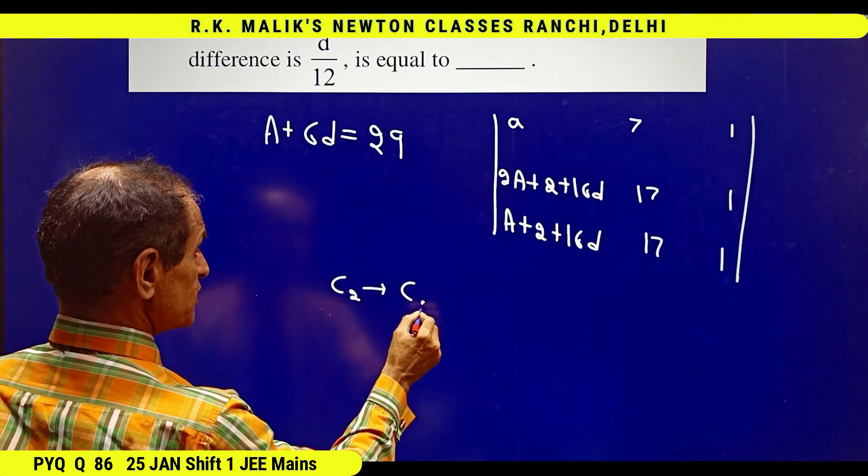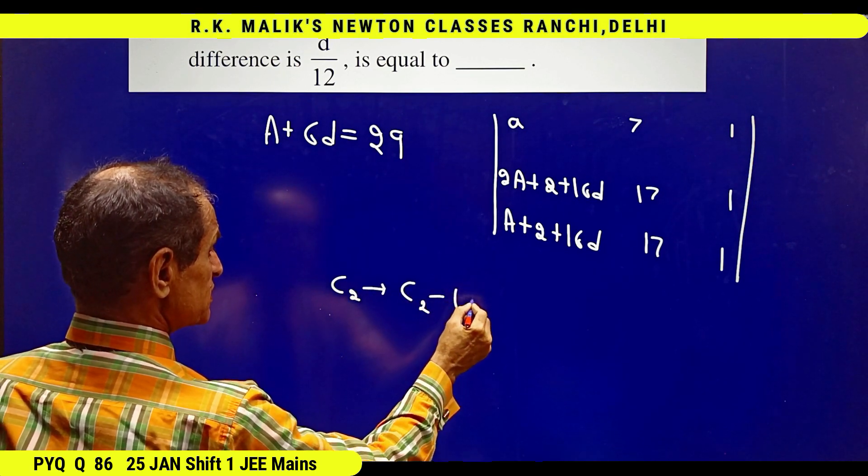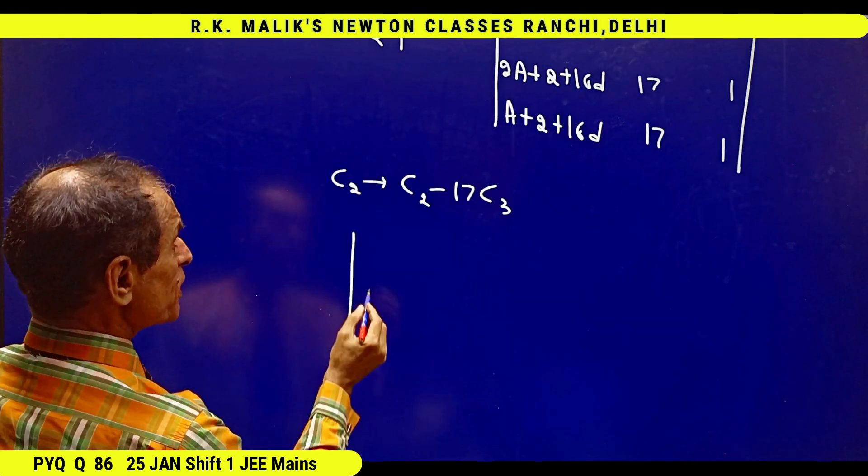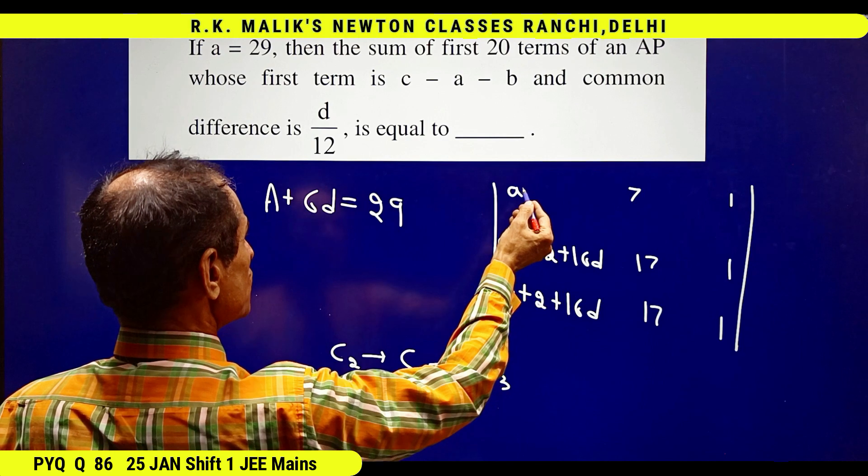C₂ changes to C₂ minus 17C₃. For a, I can write 29 also; it is not going to make any difference when I evaluate it.